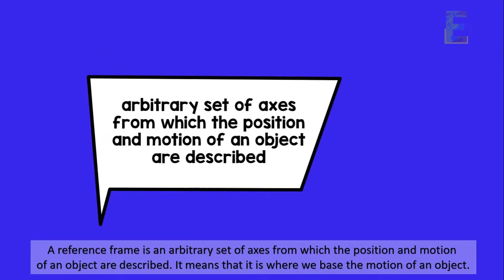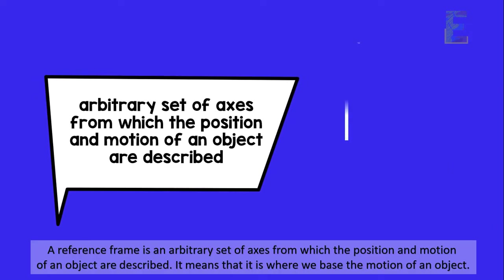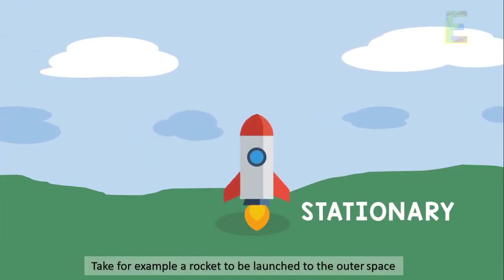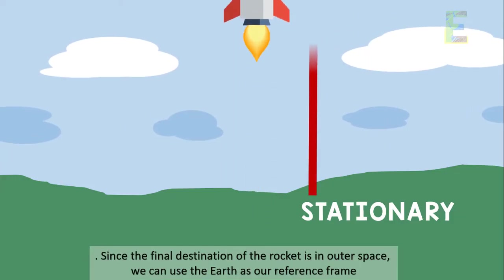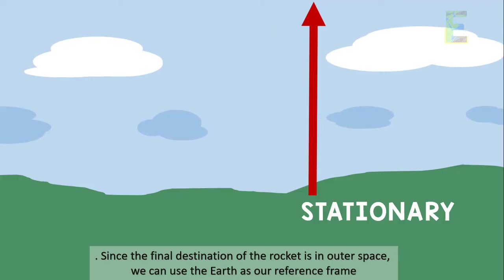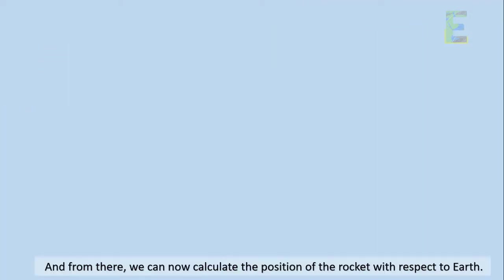A reference frame is an arbitrary set of axes from which the position and motion of an object are described. It means that it is where we base the motion of an object. Take for example a rocket to be launched to the outer space. Since the final destination of the rocket is in outer space, we can use the Earth as a reference frame. And from there, we can now calculate the position of the rocket with respect to Earth.